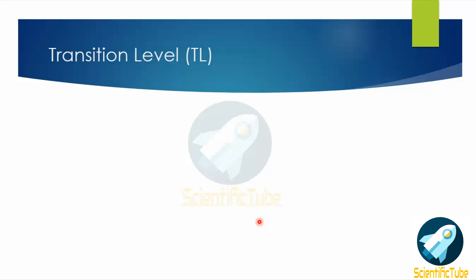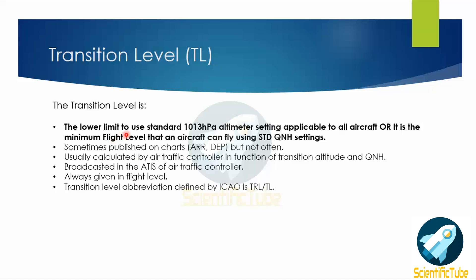Now let's speak about transition level. The transition level is the lower limit to use the standard 1013 hectopascal altimeter setting, applicable to all aircraft. It is also defined as the minimum flight level an aircraft can fly using the standard QNH setting. It is sometimes published on charts but not often — usually it is calculated by the air traffic controller based on transition altitude and QNH. It is broadcasted in the ATIS and always given in flight level. The ICAO abbreviation is TRL or TL.